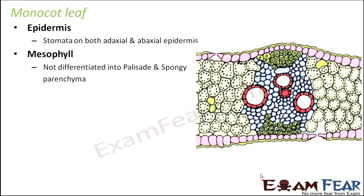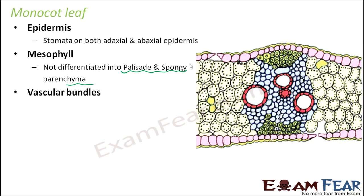Mesophyll is present, but here it is not differentiated into palisade and spongy parenchyma. In a dicot leaf you have two separate and distinct layers, but in a monocot leaf that distinction is not there. It is just one mesophyll layer consisting of parenchyma cells — not differentiated into spongy or palisade.